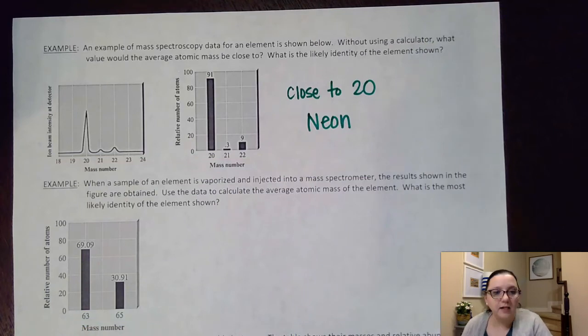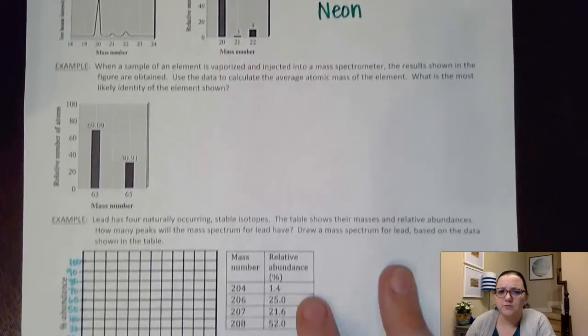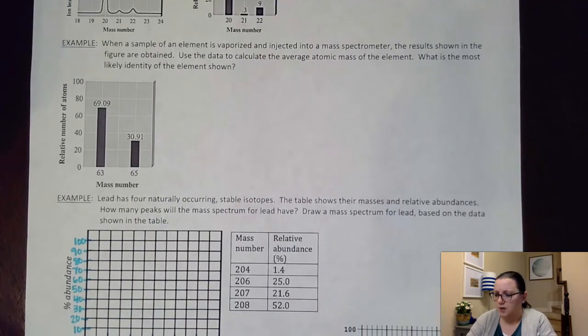Next question says, hey, when a sample of an element is vaporized and ejected into a mass spectrometer, the results shown in the figure are obtained. Use the data to calculate the average atomic mass of the element.